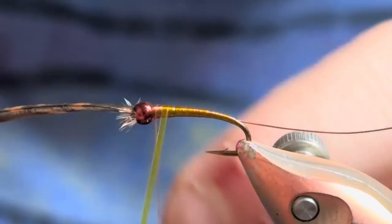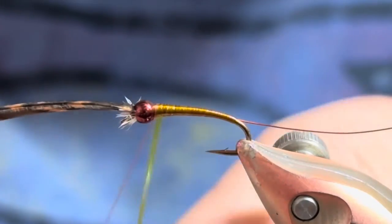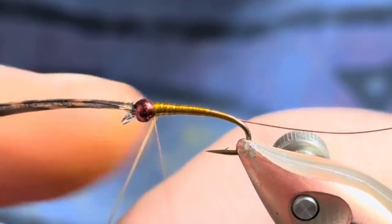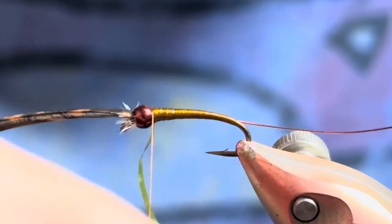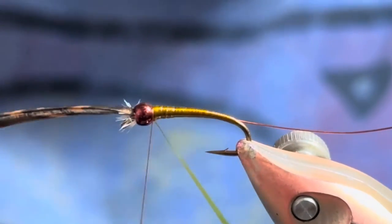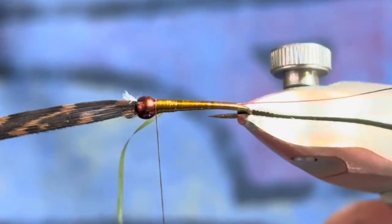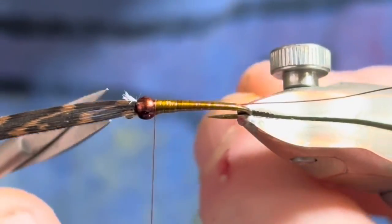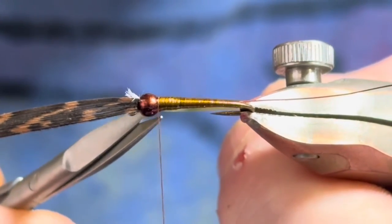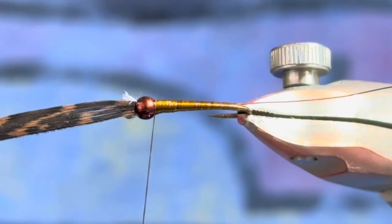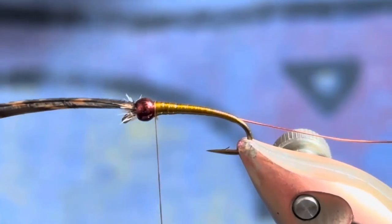We want the rusty brown to kind of show through, and that's where the dirty olive side of it comes in. So I'll just wrap this up. Buzzer wrap is awesome stuff, super realistic looking and very thin, which is what I like.